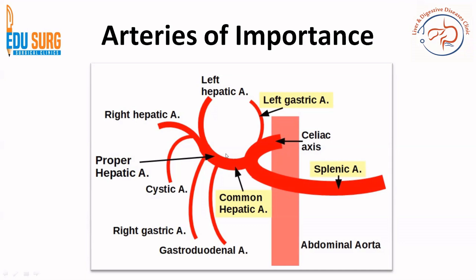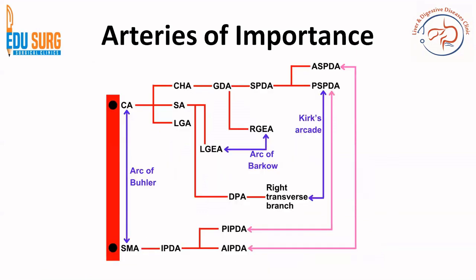The important branch in this video is the gastroduodenal artery (GDA), which usually arises from the common hepatic artery. After giving rise to the GDA, the common hepatic artery continues as the proper hepatic artery, giving rise to the right and left hepatic arteries. The splenic artery and the GDA are both critical because they supply many branches to the pancreas, as we will see in this simple schematic diagram.